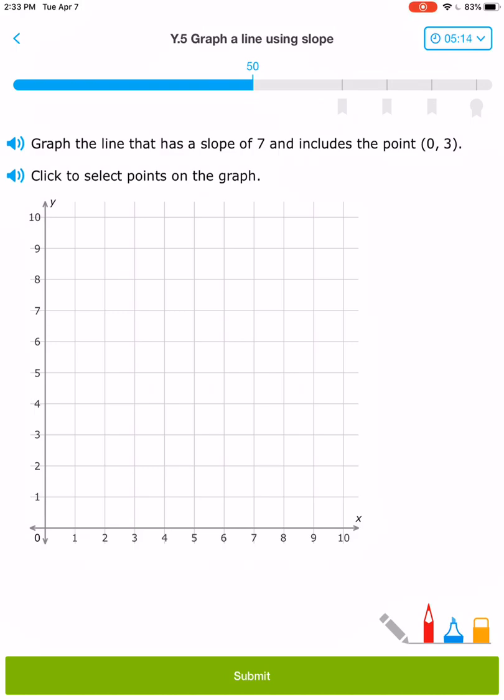Graph the point (0, 3). That is going to be 0 x, y, 3. There we go. I'm making sure I got that right this time. A slope of 7 means I need to go 7/1, which is up 7, right 1.